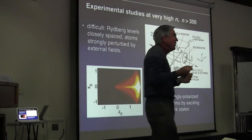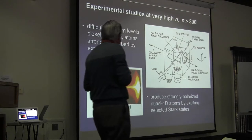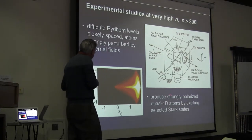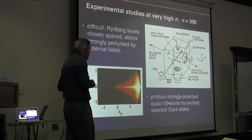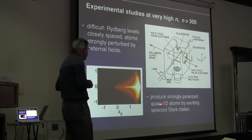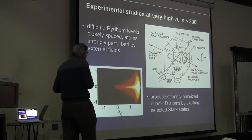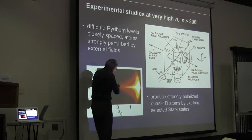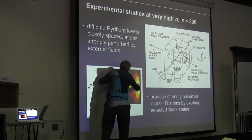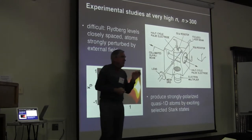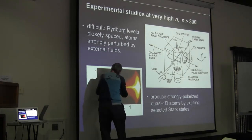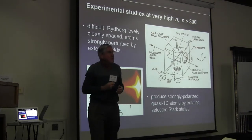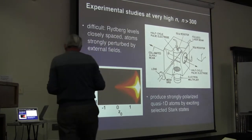We can then ask whether the atom survives the kicks or not. To determine that, we find out how many Rydberg atoms are left by field ionization — we apply a voltage ramp to the large lower electrode, and the electrons are accelerated down to a particle multiplier. We want to exert great control on these atoms, and the best way to do that is to start out with an atom which is itself in a very well defined state.